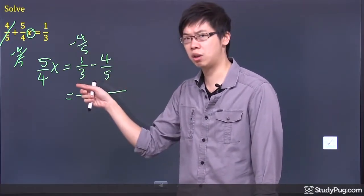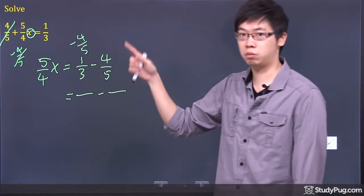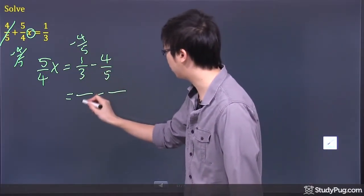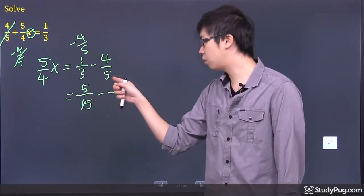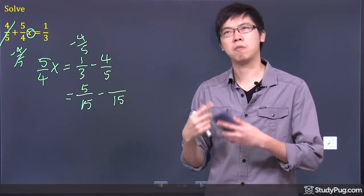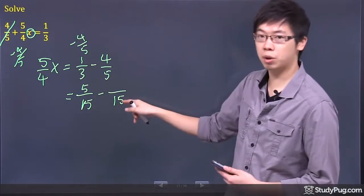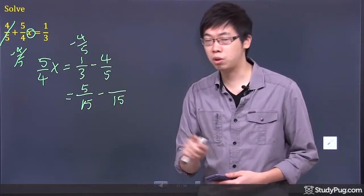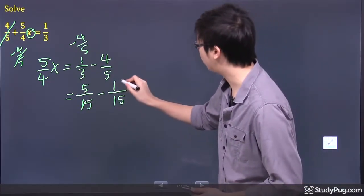So if you want to change the 3 to 15, you have to times it by 5. So you do the same to the bottom, you have to do the same to the top. So 3 times 5 is 15, and 1 times 5 is 5. Now, this one over here, because you want to get to 15, right? So mathematically, you'll be thinking that, okay, 5 times what gives me 15? Times 3. So if you times the 3 to the bottom, then you have to times by 3 to the top as well. So 3 times 4 is 12.